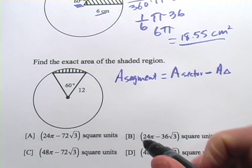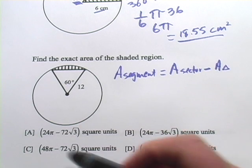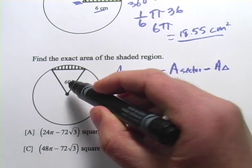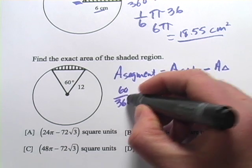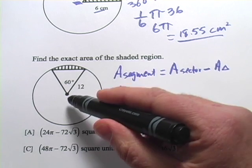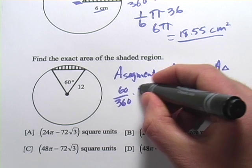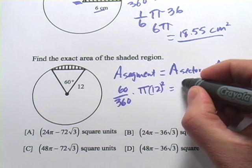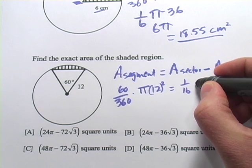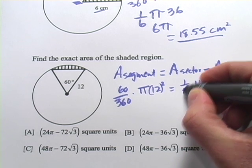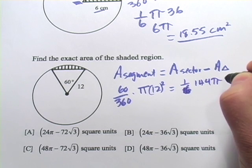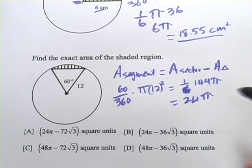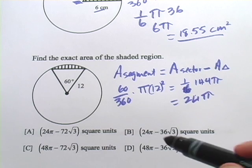Let's give that a shot. We take the central angle and put it over 360, and multiply that by the formula for the area of the whole circle. The radius is 12 here, so this would be pi times 12 squared. That equals one-sixth times 144 pi, and one-sixth of 144 is 24 pi. That's looking good — I'm seeing 24 pi in some of our answers here.